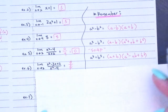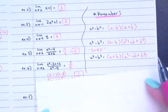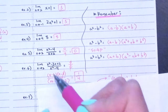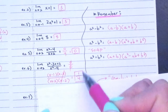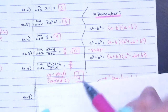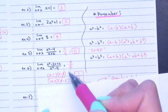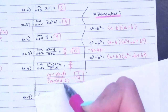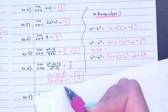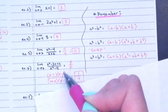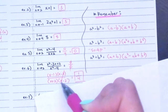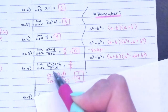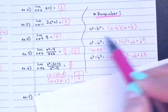When you get zero over zero, you have to factor. Factor the top and the bottom — you should be able to do that relatively quickly. You'll get an (x minus 2) on top and bottom, divide it out, then plug in 2 to get 1/4. That is your final answer. You cannot say 'does not exist' without factoring first. Canceling the common factor corresponds to a hole in the function.